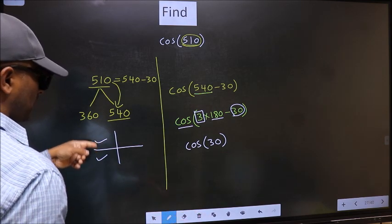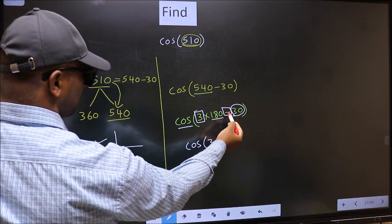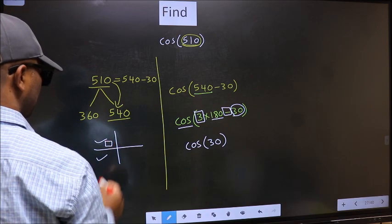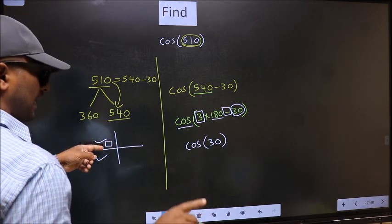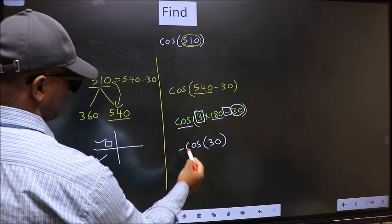So, now to select the quadrant, we should look at this symbol. Here we have negative. That means angle lies in the second quadrant. And in the second quadrant, cos is negative. So, we should put negative.